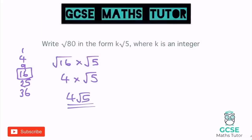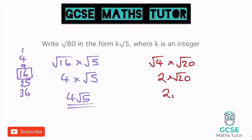It's important to note: if we had only spotted that 4 goes in, we might have written √80 as √4 × √20, getting 2 root 20. But root 20 isn't in its simplest form and can be simplified further. That would be wrong as a final answer — we'd have to continue simplifying. Always make sure you've used the largest possible square factor. So 4 root 5 is our correct final answer.